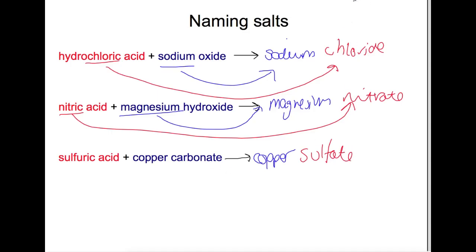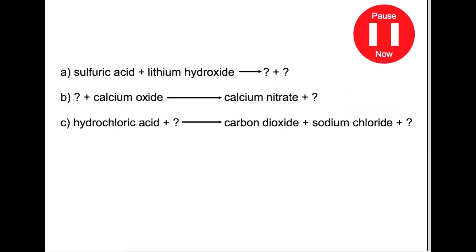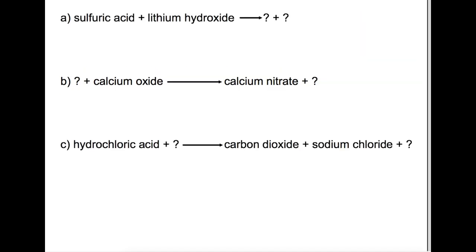Pause the video now and try to name the missing chemicals for each of these reactions. In the first reaction we are trying to name the salt that's produced, so we have lithium hydroxide as our base, so we'll have lithium, and we have sulfuric acid, so that will give us sulfate. And we always get water produced.